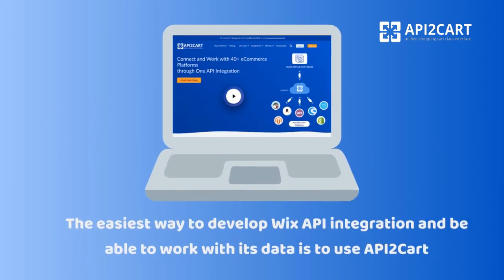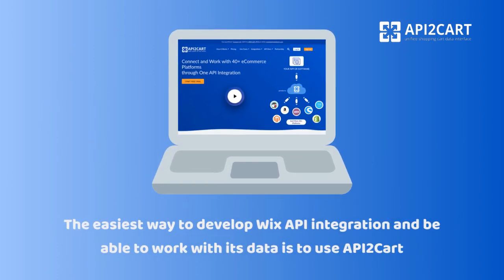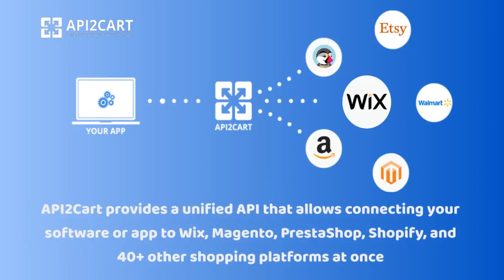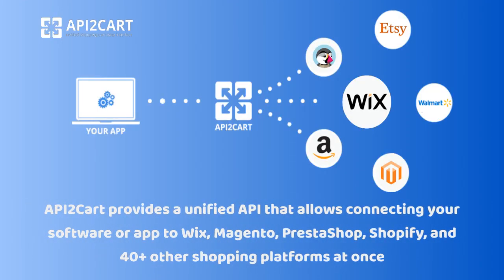The easiest way to develop Wix API integration and be able to work with its data is to use API2Cart. API2Cart provides a unified API that allows connecting your software or app to Wix, Magento, PrestaShop, Shopify, and 40-plus other shopping platforms at once.